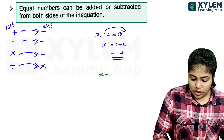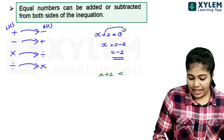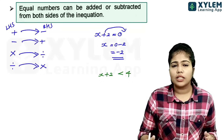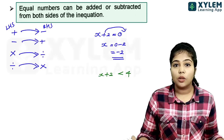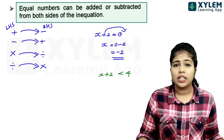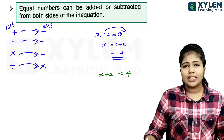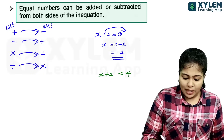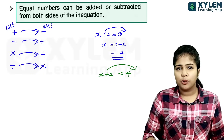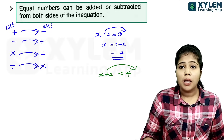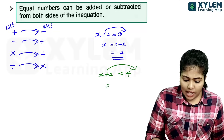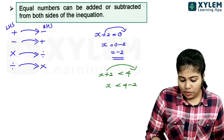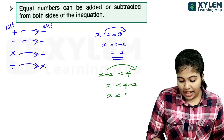For example, if x plus 2 is less than 4 — inequality is simple. x plus 2 is less than 4. Let's put the plus 2 on the right hand side: minus 2. So, x is less than 4 minus 2. That is, x is less than 2.